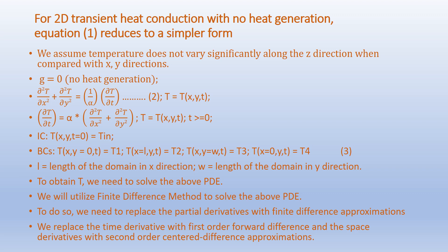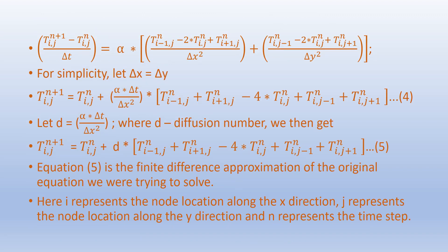To obtain temperature, we need to solve the above PDE using the finite difference method. We replace the partial derivatives with finite difference approximations — specifically, the time derivative with a first order forward difference and the space derivatives with second order centered difference approximations. Accordingly we get: (T[i,j]^(n+1) - T[i,j]^n) / Δt = α × { (T[i-1,j]^n - 2T[i,j]^n + T[i+1,j]^n) / Δx² + (T[i,j-1]^n - 2T[i,j]^n + T[i,j+1]^n) / Δy² }.